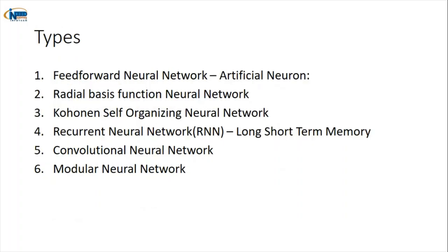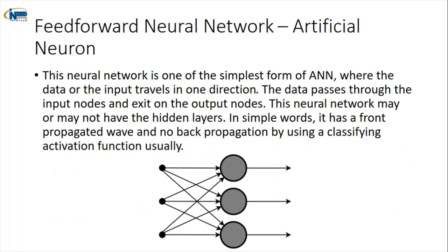The twenty-fourth algorithm is the feed-forward neural network. We give input data to the network. In feed forward, there is one layer with multiple neurons or nodes. These accept the data, perform calculations, and give the output. This is the simplest form of neural network.